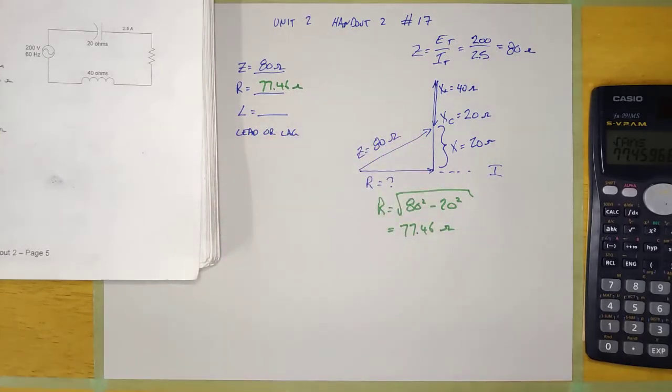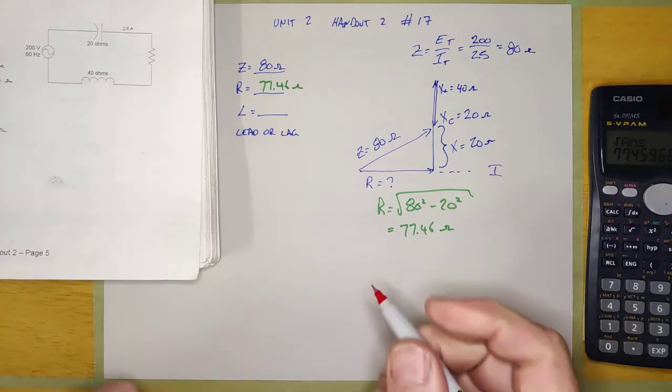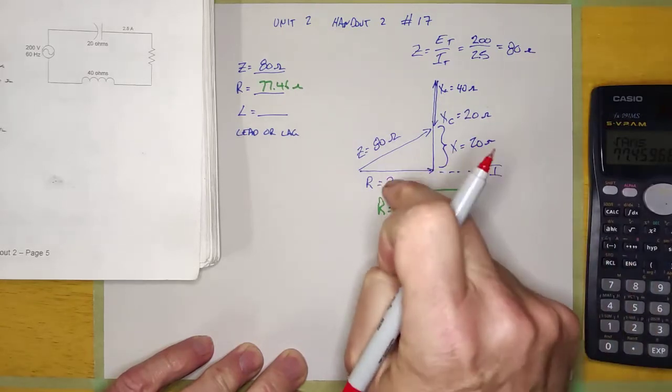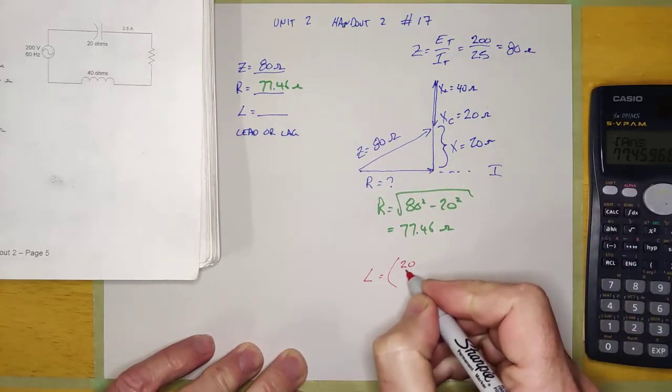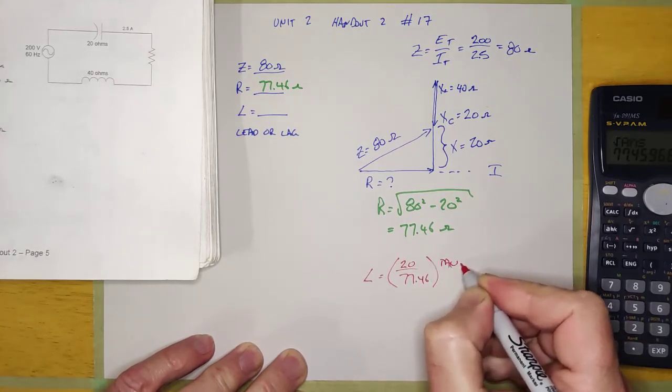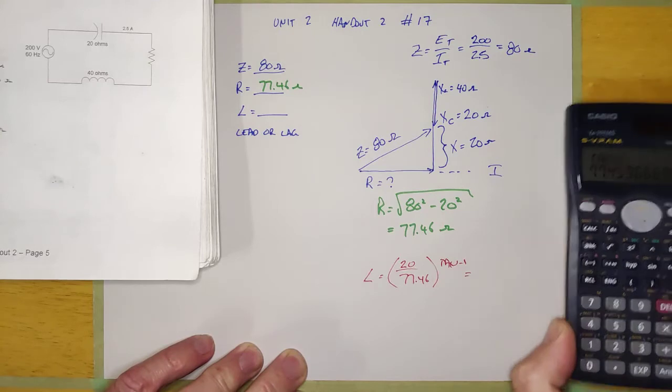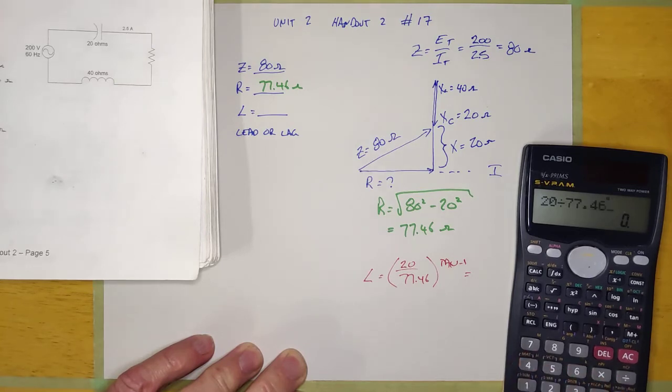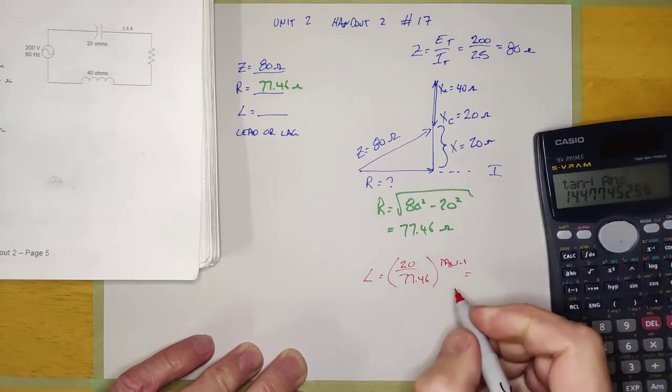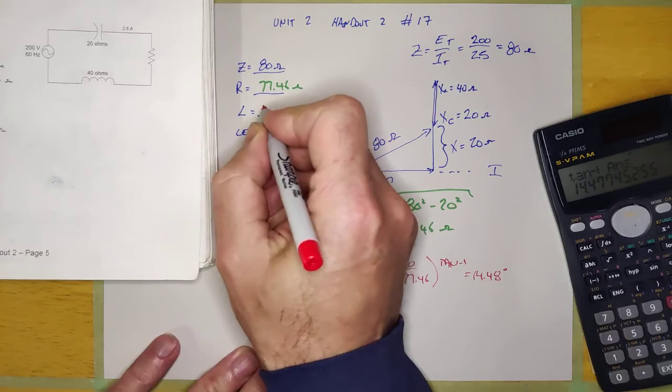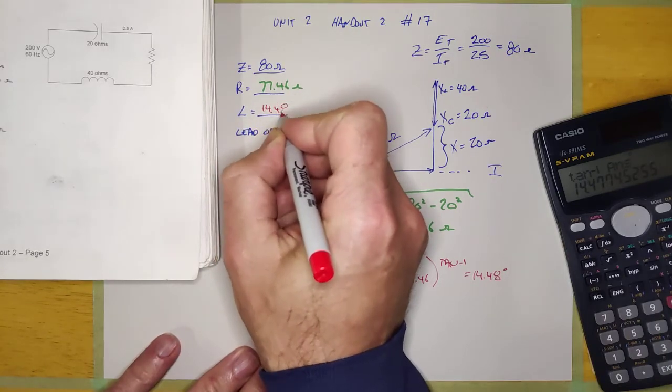Phase angle? Well, it's going to be the opposite over the adjacent inverse tan, 20 over 77.46 inverse tan. If I do that, 20 divided by 77.46 equals shift tan equals 14.48 degrees. 14.48 degrees.